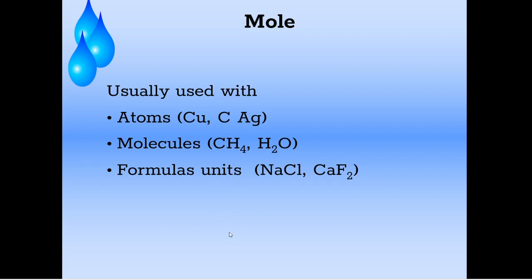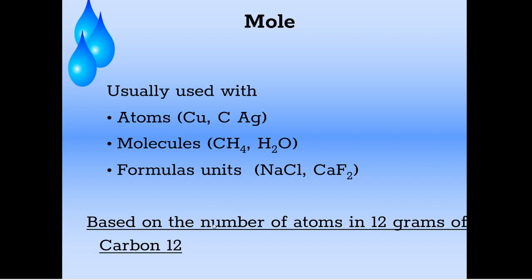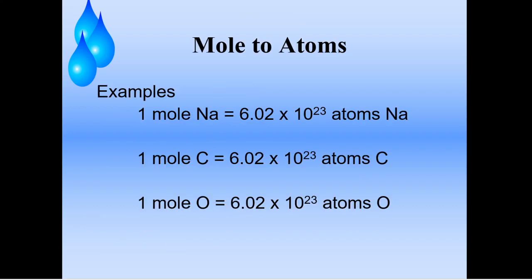Sometimes you might hear the term formula units, though we won't do too much with that this year. You may also hear that the mole is based on the number of atoms in 12 grams of carbon-12. Remember when we talked about isotopes — elements with different numbers of neutrons giving different weights. Carbon-12 is one of the most common on Earth. When someone weighed out one gram of carbon-12 and counted the atoms, they found 6.02 times 10 to the 23rd atoms — and that's where Avogadro's number took shape.